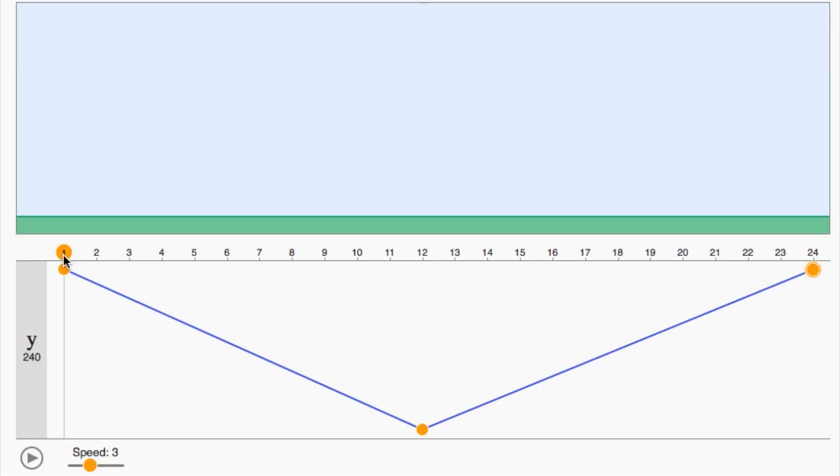You can see that by default, the computer connects our poses with a straight line in the graph. This is called linear interpolation. It results in even spacing of the poses. When we play it back, the ball will move at a constant rate.